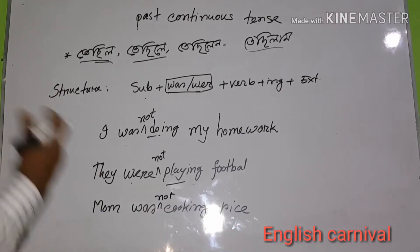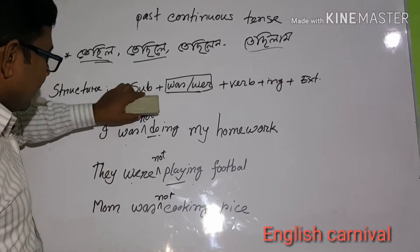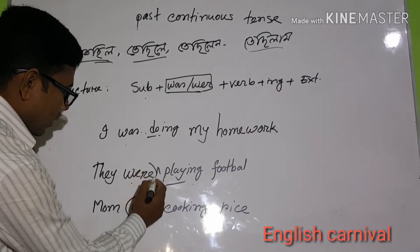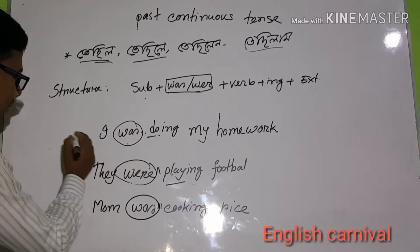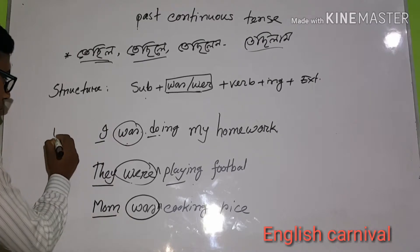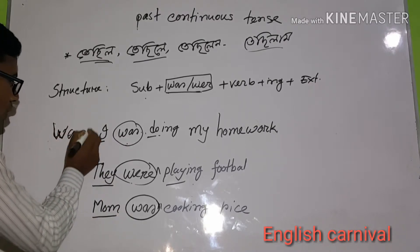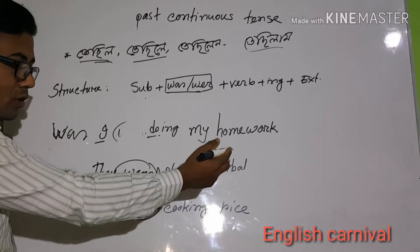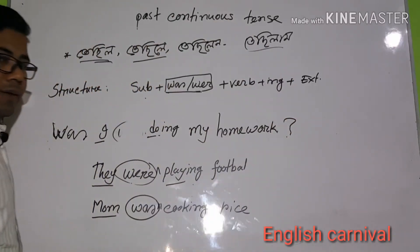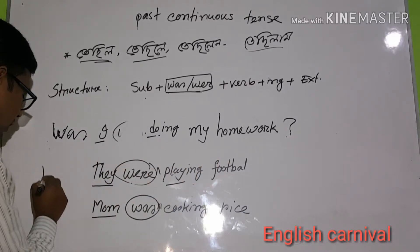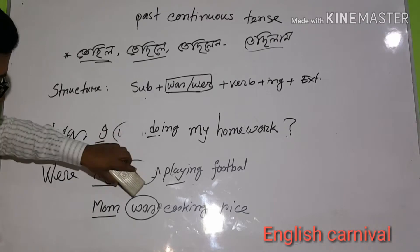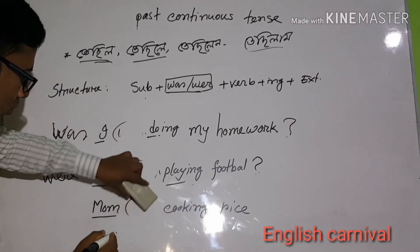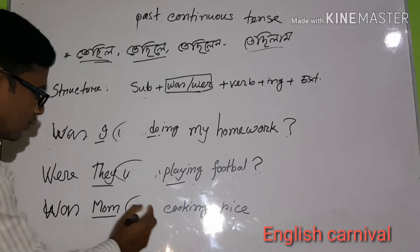Now for interrogative sentences, it is also simple. We bring was/were before the subject. So the structure becomes: Was/Were + Subject + verb-ing? For example: 'Was I doing my homework?' 'Were they playing football?' 'Was mom cooking rice?' Just invert the subject and was/were to form a question, and add a question mark at the end.